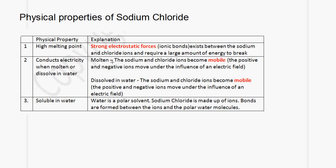Now let us look at the physical properties of sodium chloride. Sodium chloride has a high melting point. The reason for this is that there are strong electrostatic forces, or ionic bonds, that exist between the sodium and chloride ions. Therefore, a large amount of energy is required to separate the ions, and that is why it has a high melting point.